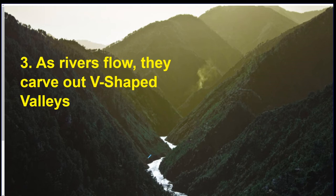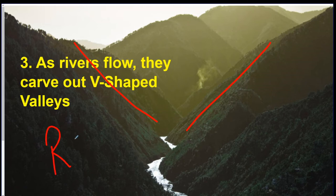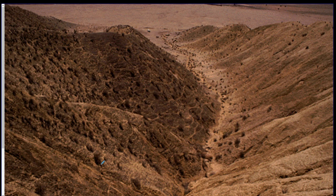Rivers carve out V-shapes in the valleys they flow through. You can see in this picture the river at the bottom and the big V. That's a sign of a river — rivers are the only thing that cut out V-shapes. A memory trick: if you spell the word 'river,' the letter V is in there, so: V-shaped valley.